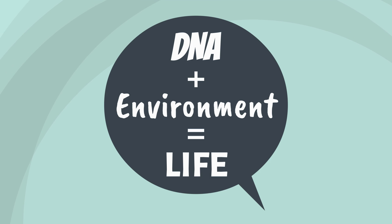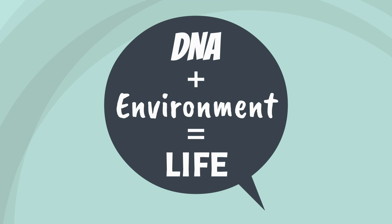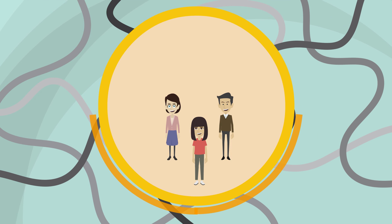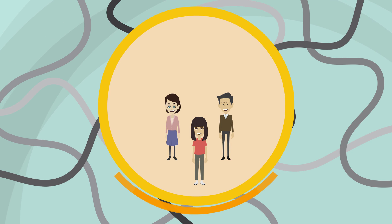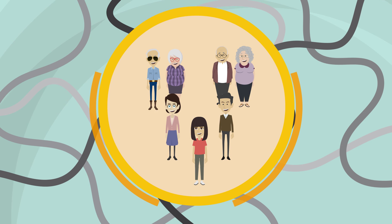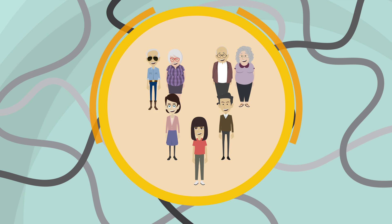Your DNA code is exclusive to you and it is part of what makes you unique. Daisy's spit sample contains her DNA. This DNA is a unique mix of the DNA from Daisy's biological parents, and in turn Daisy's biological parents each have a unique mix of DNA from their biological parents, who are Daisy's biological grandparents. Because DNA is inherited in this way across generations, we can analyze it to explore someone's ancestry.